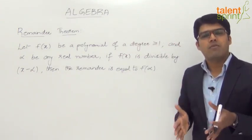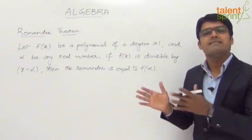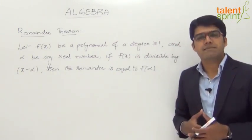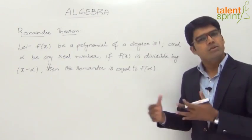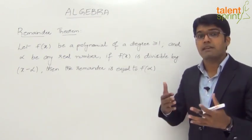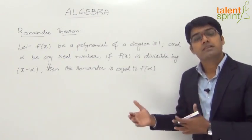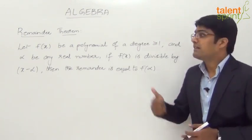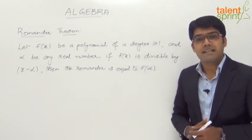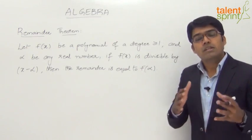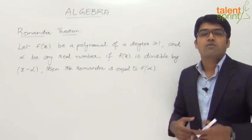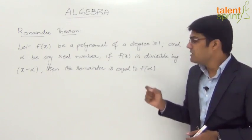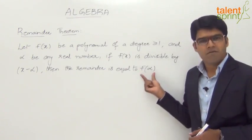So, there is a polynomial f of x and there is a real number alpha. When we divide by x minus alpha, we get some remainder which can be verified using the division method we have seen earlier. But the remainder theorem states that instead of doing the long division to find out the remainder, we can directly say that the remainder of that division is going to be f of alpha.